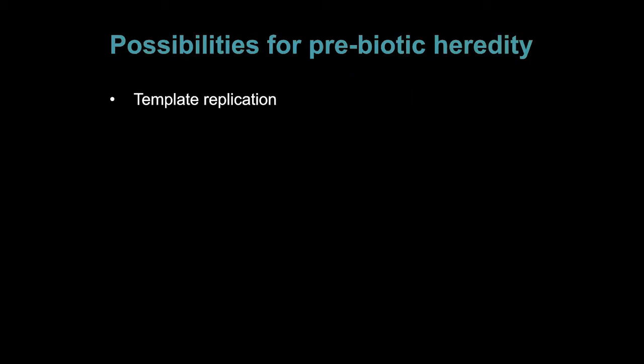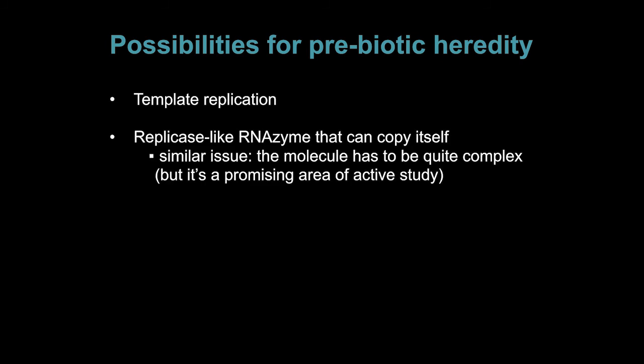There are several possibilities for how heredity could operate in a prebiotic system. Template replication is one of them, as I showed earlier in the demonstration. Another idea is that you could have an RNA enzyme that is similar to a replicase in that it's able to copy RNA. It may not be able to copy any string at all, but it would be good enough to copy its own string. This doesn't completely get around Eigen's paradox either, because you still have to start with something complicated enough to perform as an enzyme. But it may be initially much simpler than the enzymes required to replicate any possible RNA strand. And so this is a potentially promising area of active research.